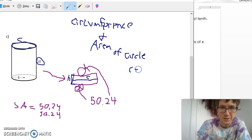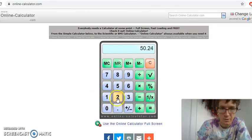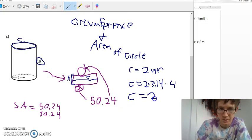Our circumference is equal to 2πr, so 2 times 3.14 times our radius which is 4. So 2 times 3.14 times 4, that gives you 25.12. So our circumference was 25.12.